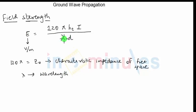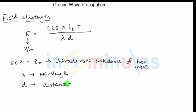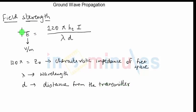If wavelength is increasing, the electric field strength will reduce. D is the distance from the transmitter, so if the distance keeps on increasing, it is very obvious that the field strength will decrease.